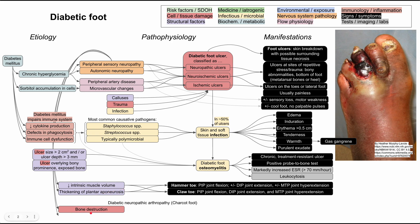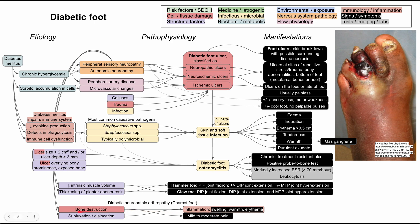You can also have bone destruction as well as subluxation and dislocation of the joints, leading to diabetic neuropathic arthropathy — also known as Charcot foot. In early stages, Charcot foot may have mild to moderate pain when the patient still has some sensation. What really damages the foot is the chronic state of inflammation from bone destruction and joint dislocation, causing the joints to be swollen, warm, and red. Over time, the foot becomes increasingly deformed and eventually painless, leading to midfoot collapse and a characteristic rocker-bottom foot deformity.